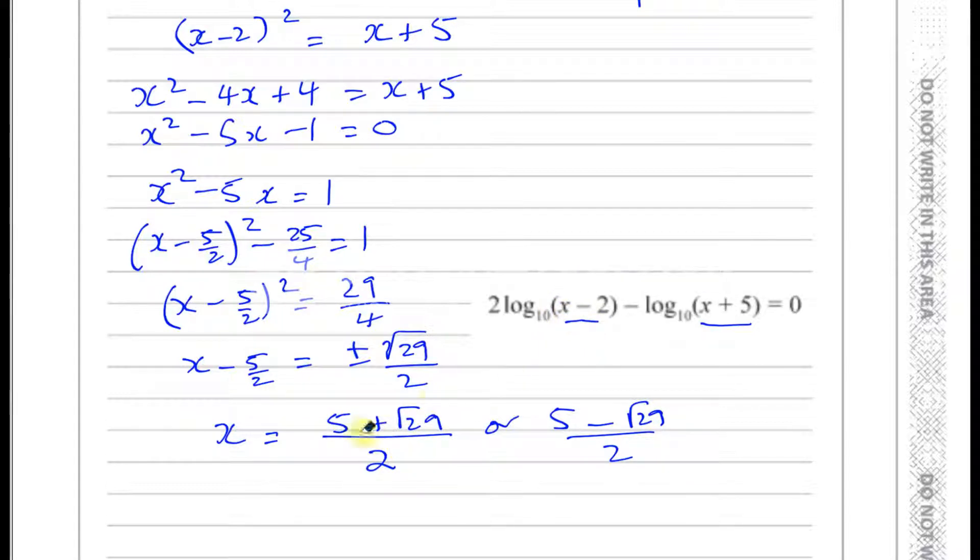So if I use a value of (5 plus root 29) over 2, and substitute it into here, and here, and any of those parts become negative or 0, then it will be undefined. So if I have (5 plus root 29) over 2, that's going to be like 2.5 plus something, so that's going to be bigger than 2, so that's fine. And of course, that's going to be bigger than 2. It looks like this is our solution.